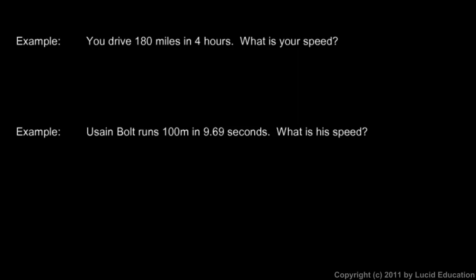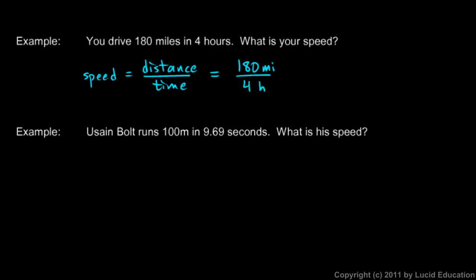Here are a couple of examples. In the first one, you're told you drive 180 miles in four hours. What is your speed? Well, here's our formula: speed is distance divided by the time. We put in the distance — 180 miles — and we put in the time — four hours. 180 divided by four is 45. We still have to keep the units, so the answer is 45 miles per hour. If you go 180 miles in four hours, then you went 45 miles per hour on average.